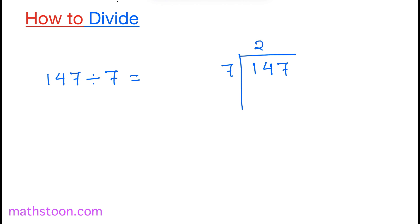We know that 7 times 2 is 14. Subtract we get 0.